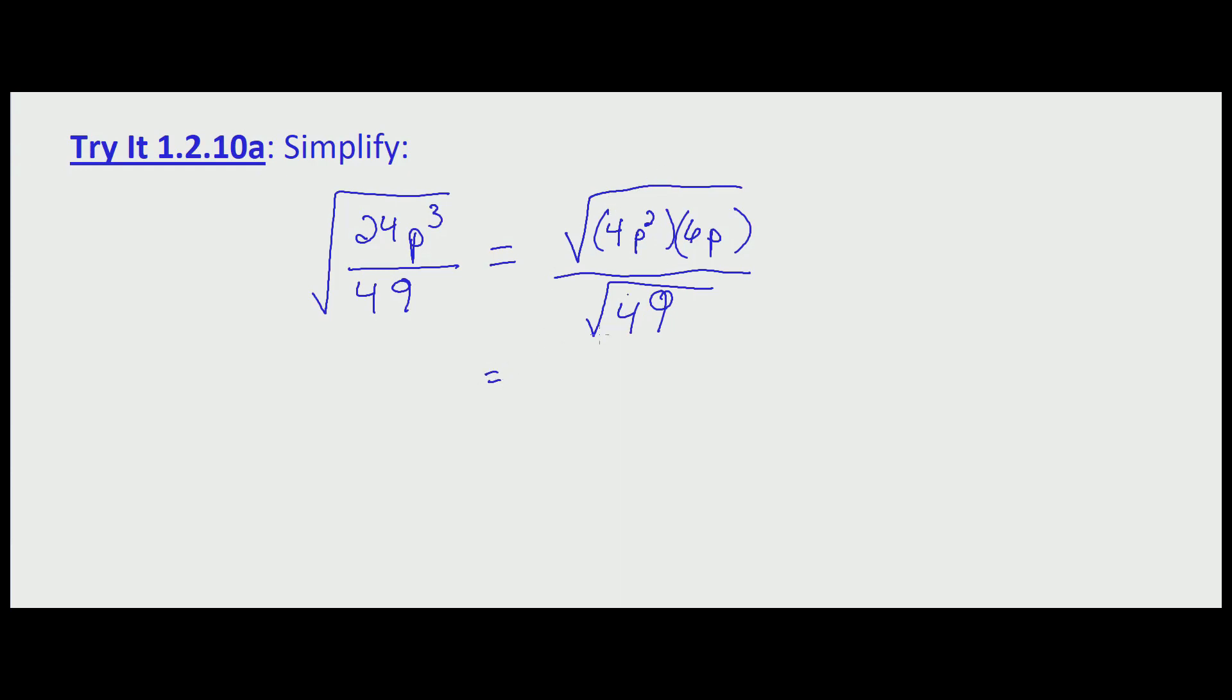So now we further separate the numerator. This is the square root of 4p squared times the square root of 6p. And then the square root of 49 is just 7.